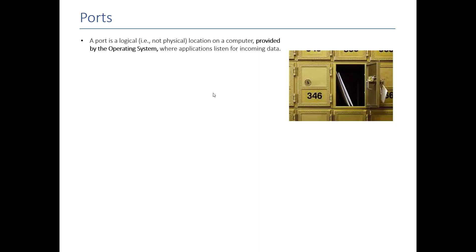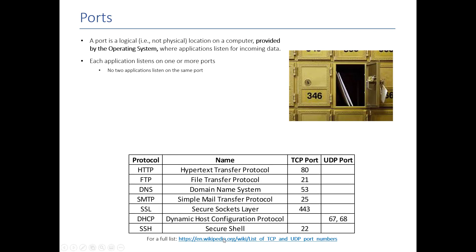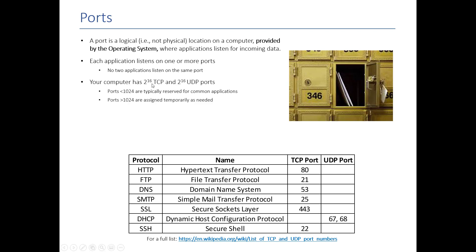The answer is that we need additional information specifying what application this packet is intended for — and that brings us to ports. A port is basically a logical location on your computer, provided by the operating system, where an application can listen for incoming network traffic. You can think of it like PO boxes in a mail room. Everybody has the same mailing address — that's like your IP address — but the PO box is like your port: it's where you are listening or waiting to receive information just for you. Each application can listen on one or more ports, and two applications cannot listen on the same port.